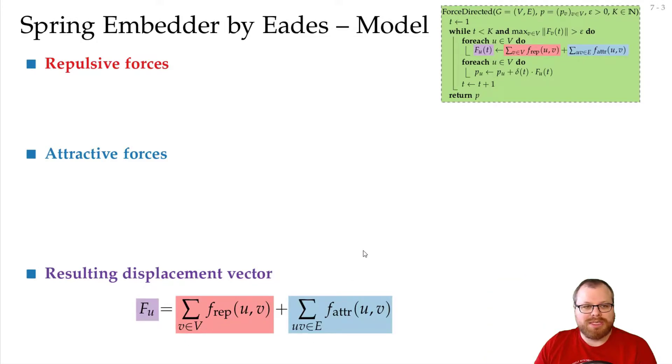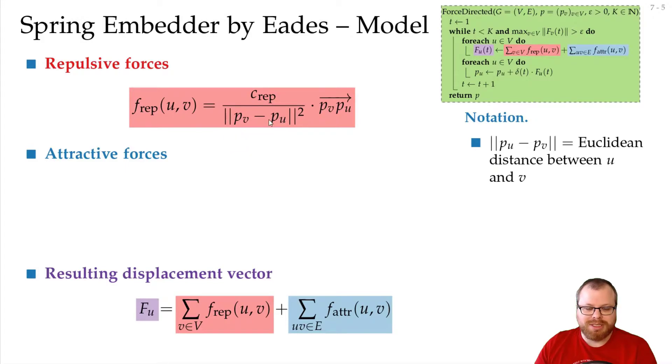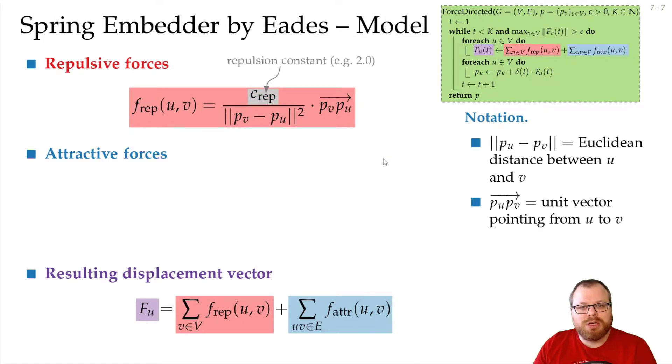Now how does Eades model this? For the repulsive forces we imagine that we have magnets, and he defines that the repulsive force between two vertices is this formula. What do all these parts mean? This here is just the Euclidean distance between the two vertices. This here is the direction from vertex v to vertex u.